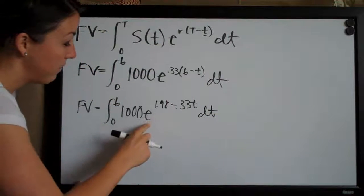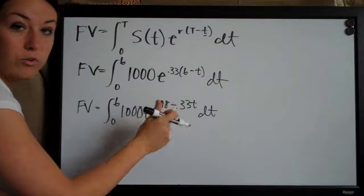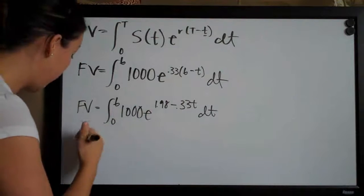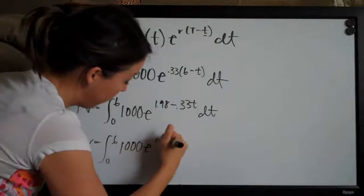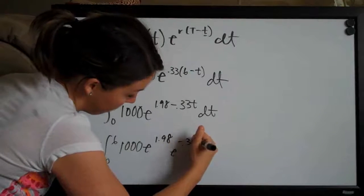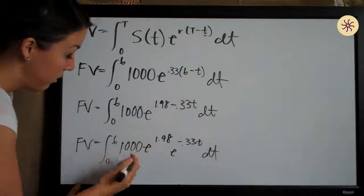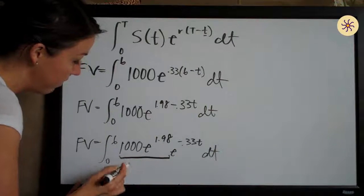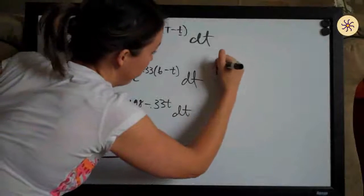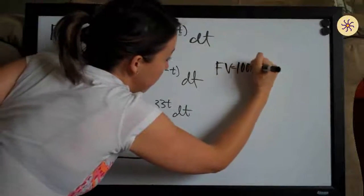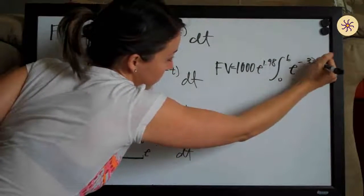When we have two terms added or subtracted in the exponent on e, we can break them apart. So from zero to six, one thousand — we separate it so we have e to the one point nine eight multiplied by e to the negative point three three t. Since e to the one point nine eight is a constant, it becomes part of the coefficient and we pull it out in front of the integral. So future value equals one thousand times e to the one point nine eight, times the integral from zero to six of e to the negative point three three t, dt.